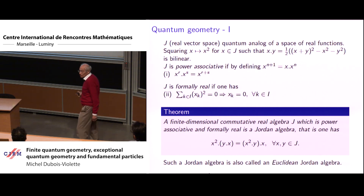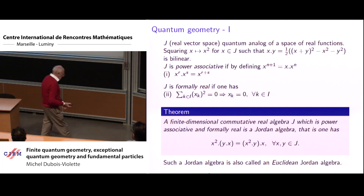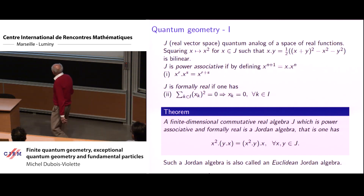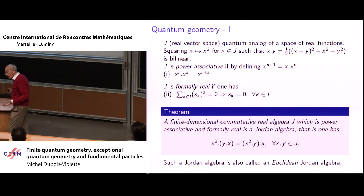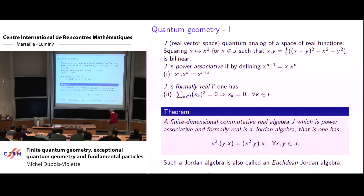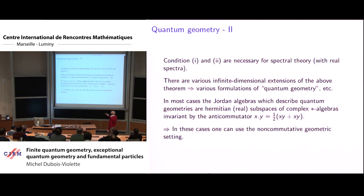Any Jordan algebra is power associative, so the first condition is automatically satisfied, but the formally real condition is not automatic. These are the class of algebras which are observable algebras for a finite-dimensional quantum space. In most cases this algebra appears as a sub-algebra of an associative algebra, stable under the anti-commutator, and then the Jordan algebra is called special.